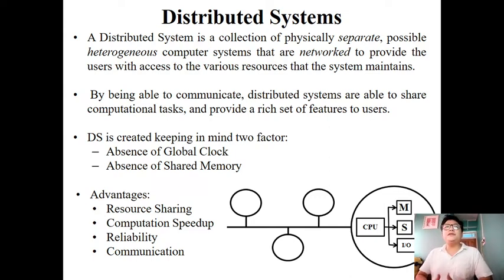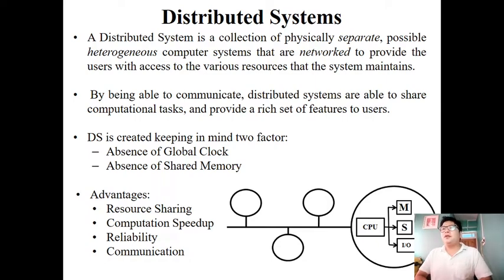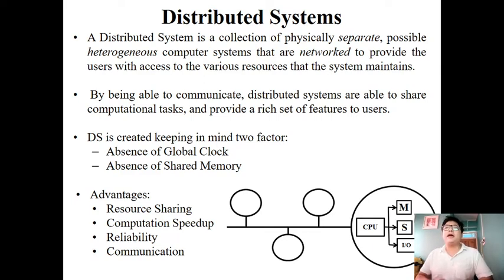It is practical to connect multiple computer systems using a network in a small area or wide area. One advantage is resource saving — if you have a large amount of information that exceeds a single system's memory, you can divide the information into small segments and store it across different computer systems. This is called divide and store.